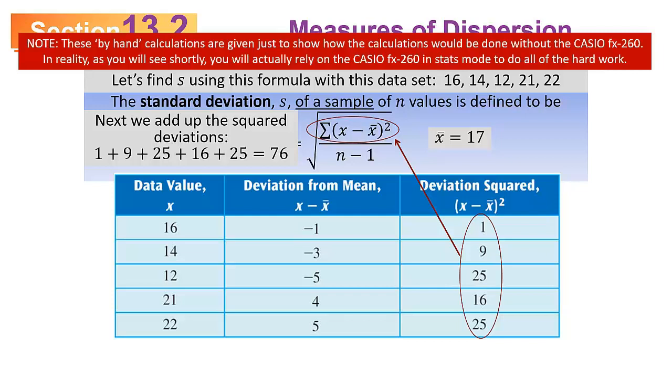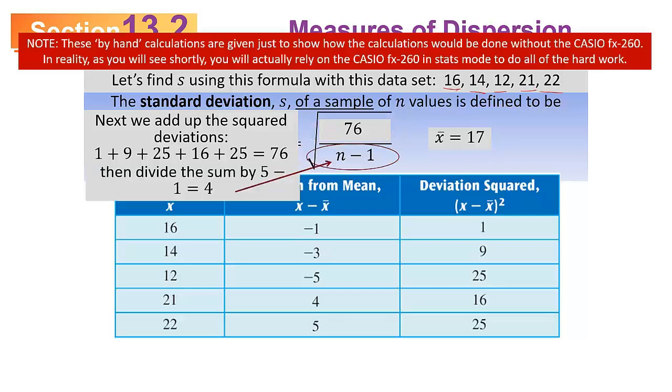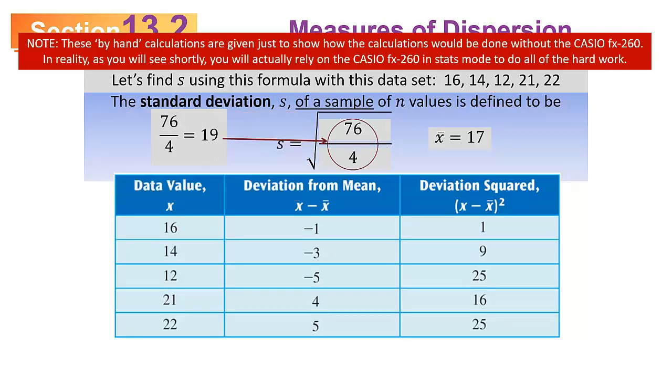So the numerator inside that square root symbol is 76. The denominator is n minus 1, where n is how many values there are. We said there were 5, so n minus 1 would be 4. You get 76 divided by 4 under the square root, which is the square root of 19. If you take the calculator and do the square root and round to two decimal places, you get about 4.36.